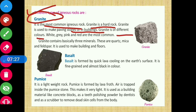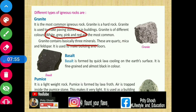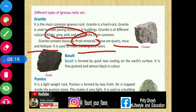Granite is of different colors — white, grey, pink, and red are the most common. Granite contains basically three minerals: quartz, mica, and feldspar. It is used to make buildings and floors.